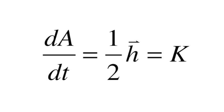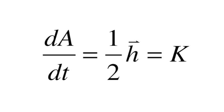One-half h is just a constant, so this equation proves that the line between the sun and the planet sweeps out equal areas over constant times.